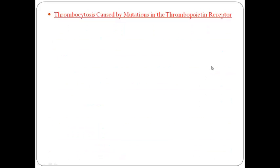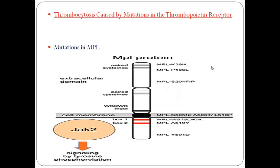Thrombocytosis can also be caused by mutations in thrombopoietin receptors. The mutation is mainly in the myeloproliferative leukemia (MPL) protein, localized on the cell surface. The mutation involves substituting leucine at position 505 with asparagine. As a result, there is increased signaling, the thrombopoietin level is elevated in the blood, and consequently the platelet count increases.